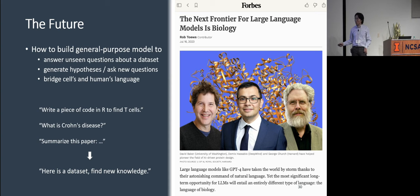And this really needs a way to bridge the cell's language and the human's language. So right now, people are already using the chat GPT to ask questions like, write me a piece of code in R to find the cell type we want to see. And people want to query it about some specific diseases. What are they? What are markers of the diseases? And people use those models to summarize biological papers, to read them faster. But in the future, we really want a model where we can ask it, here is the dataset, and can you find some new knowledge from it?